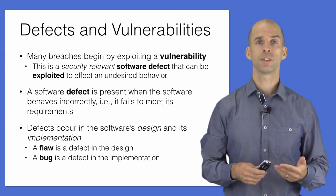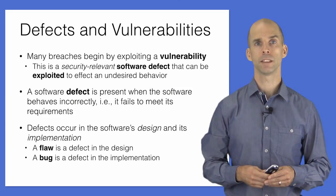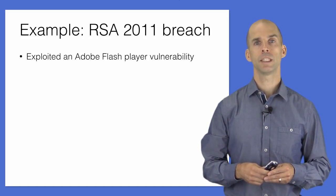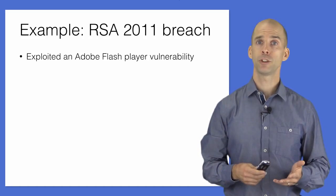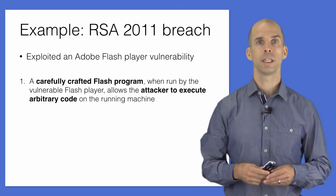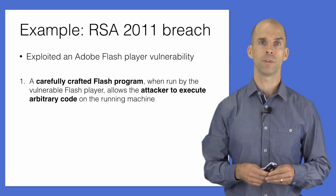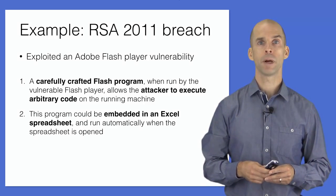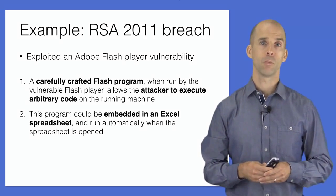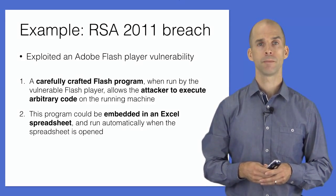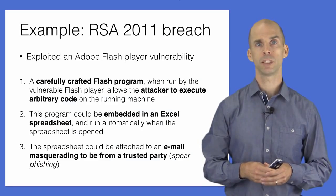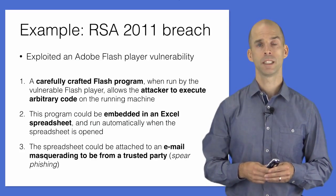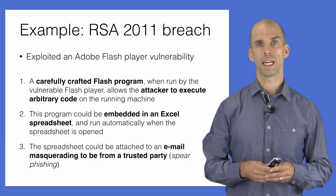A vulnerability is a defect that affects security-relevant behavior rather than simply correctness. Consider the RSA 2011 breach: it hinged on a defect in Adobe Flash Player. Where Flash Player should benignly reject malformed input files, the defect allowed an attacker to provide a carefully crafted input file that could manipulate the program to run code of the attacker's choice. This file could be embedded in a Microsoft Excel spreadsheet, automatically invoked when opened. The adversary sent such a spreadsheet to an executive — the email masqueraded as being from a colleague, a spear phishing attack.